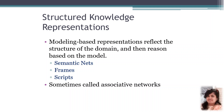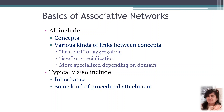Structured knowledge represents modeling-based representation: reflect the structure of the domain and then reason based on the model. Examples we have already talked about are semantic nets, frames, and scripts. This type of knowledge is sometimes called associative networks. These networks include concepts and various kinds of links between concepts — such as has-part or aggregation, is-a or specialization — and they typically also include inheritance and some kind of procedural attachment.